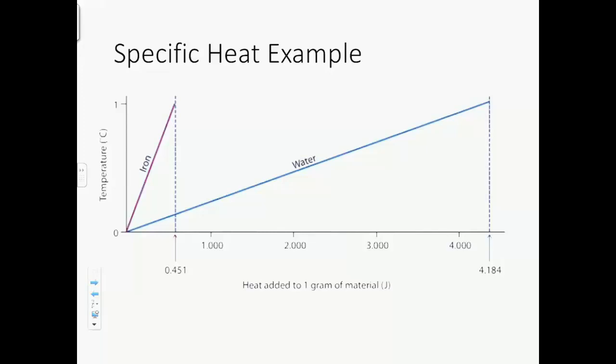Let's look at iron versus water. Water takes 4.184 joules in order to change one degree Celsius, one gram, one degree Celsius, whereas iron, if you have one gram of it, it only takes 0.451 joules. So water is going to require a lot more energy before it'll make that change. It has a lot larger amount of that inertia we talked about.